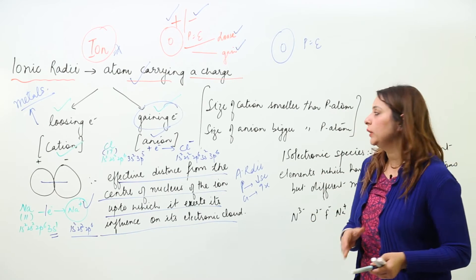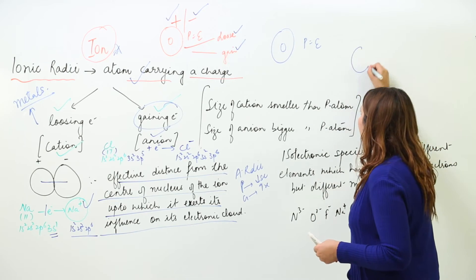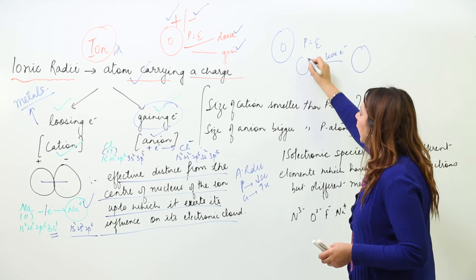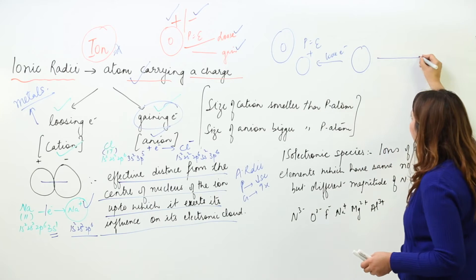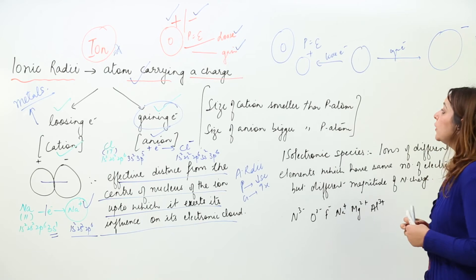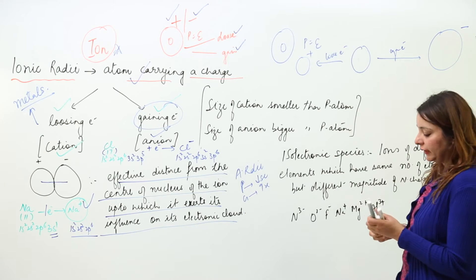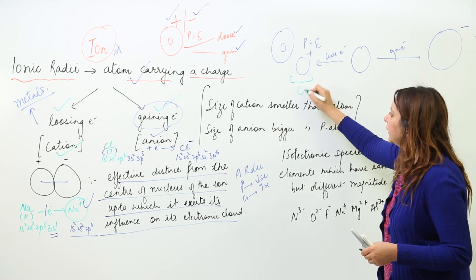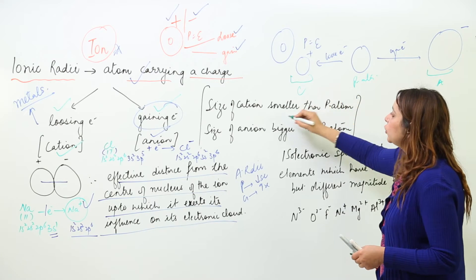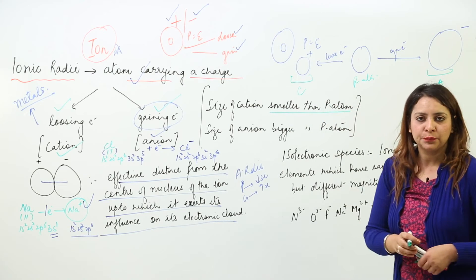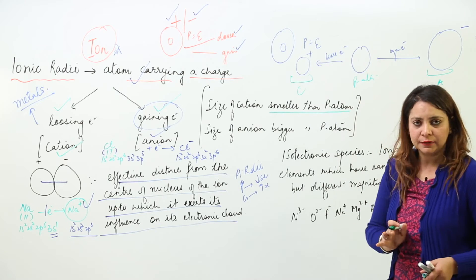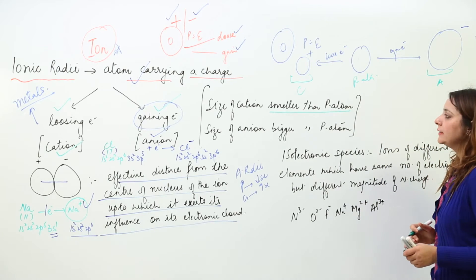Now, if we have a parent atom, whenever it loses electrons it becomes a cation, and whenever it gains an electron it becomes an anion. If we compare the size of the cation and anion with the parent atom, we will see that the cation is always smaller than the parent atom, and the anion is always bigger than the parent atom.